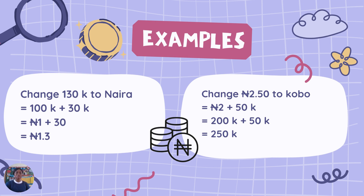Now let's learn how to change from Naira to Kobo and from Kobo back to Naira. Look at this example: change 130 Kobo to Naira. 1 Naira is equal to 100 Kobo, and 100 Kobo is equal to 1 Naira. So if you have 130 Kobo, that means 100 Kobo plus 30 Kobo. And since 100 Kobo equals 1 Naira, you have 1 Naira plus 30 Kobo, which gives you 1.30 Naira. Now changing from Naira to Kobo: we have 2 Naira 50 Kobo. 2 Naira means 200 Kobo, so 200 Kobo plus 50 Kobo gives you 250 Kobo. Just remember that 1 Naira is equal to 100 Kobo and 100 Kobo is equal to 1 Naira. Changing between Kobo and Naira is super easy.